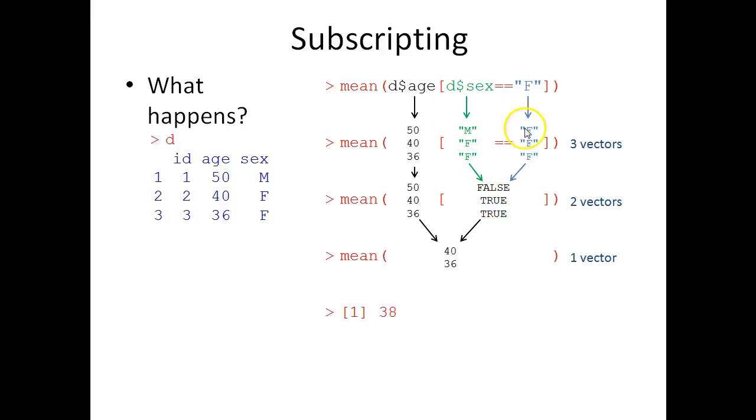So this part of the code returns a vector of length three, a logical vector containing false, true, true, pointing out where the females are in this data set.